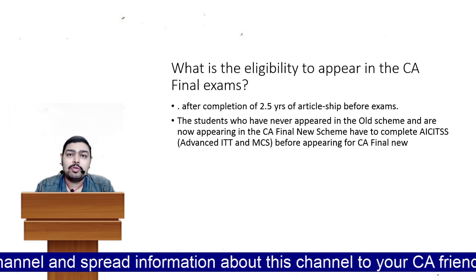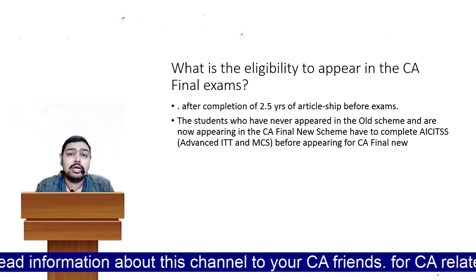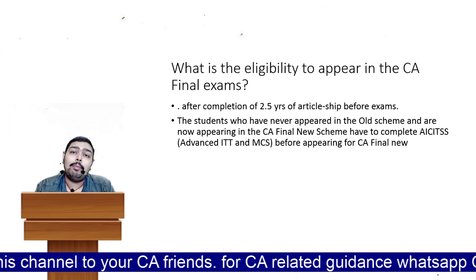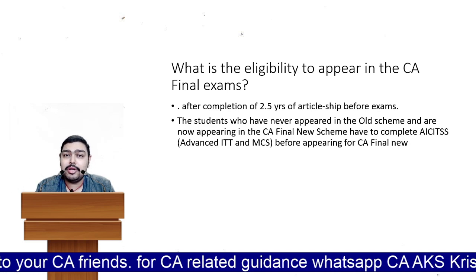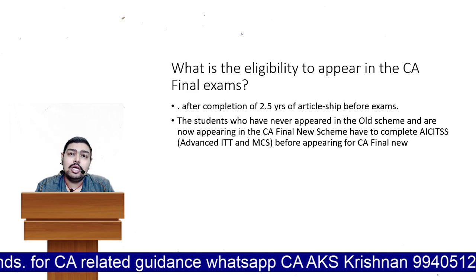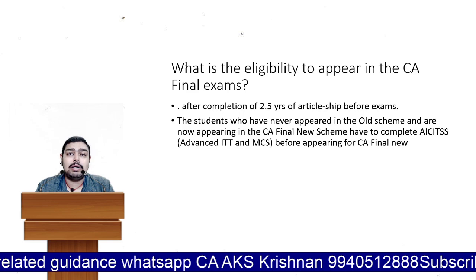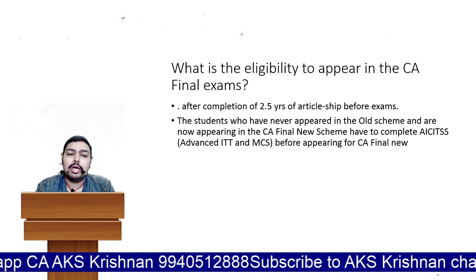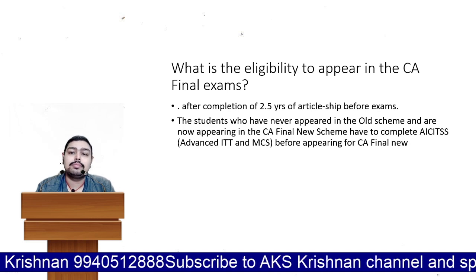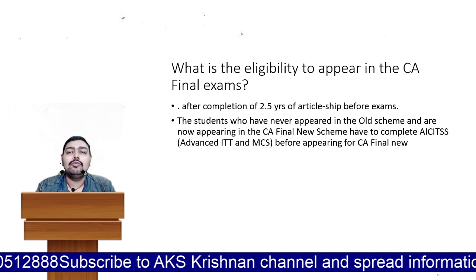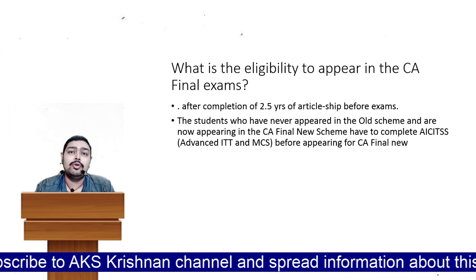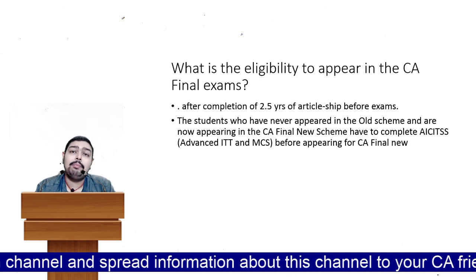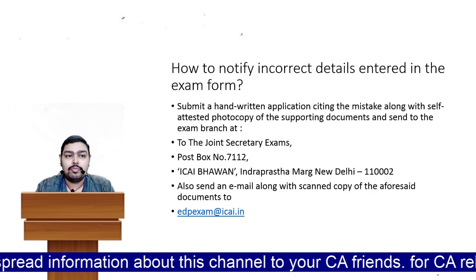What is the eligibility criteria regarding Advanced ITT and Orientation when converting from old syllabus to new syllabus for CA Final? You should have completed two and a half years of articleship. If you have already applied and appeared for the examination in the old syllabus at least once, you need not complete the Advanced ITT and MCS. But if you applied for the examination but never actually appeared, then you must go through the Advanced ITT and MCS. So appearing at least once in the old syllabus exam exempts you from this requirement.